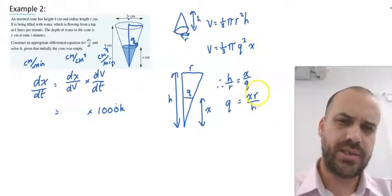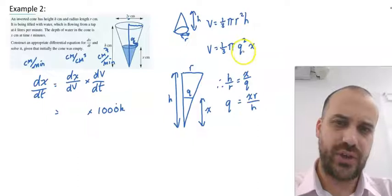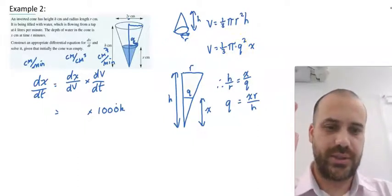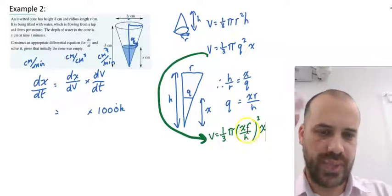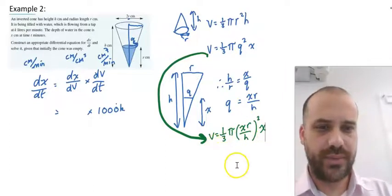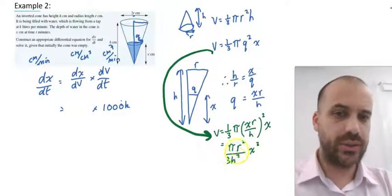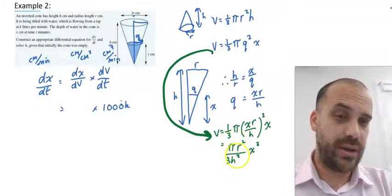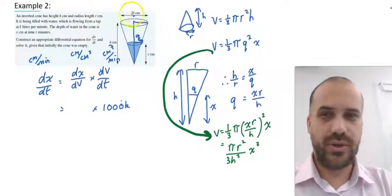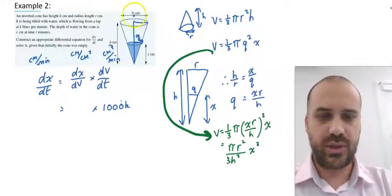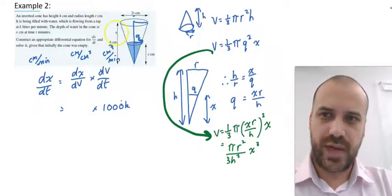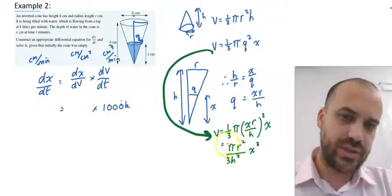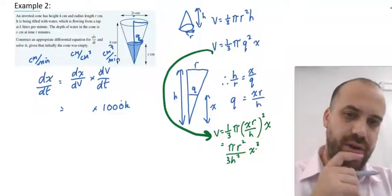So putting xr/h in for q here is going to be great. Let's do it. We've subbed that in. We can tidy that up a little bit. So this is going to look a little bit strange here, but remember, π r² divided by 3h² all of that together is actually a number because we do know, we don't know the length of r, but we do know it's a constant. We don't know the length of h, but we do know it's a constant. So this r and this h are constants. This whole thing together is a number. x³, x is our variable here. So we know that v equals that.